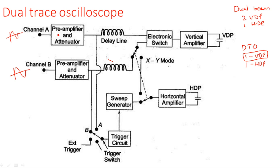The input from Channel A is first applied to a pre-amplifier and attenuator, which is the vertical amplifier. Similarly for Channel B. The vertical amplifier is a wideband amplifier consisting of two stages internally: a FET input amplifier followed by a BJT main amplifier. The pre-amplifier and attenuator section is the wideband amplifier stage.